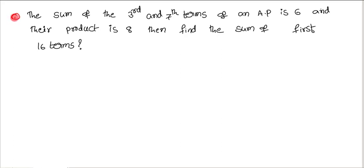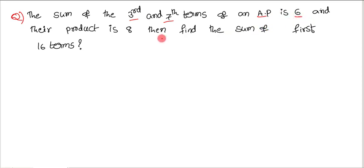Welcome to JSMS Academy. Now we are going to discuss a problem which is based on arithmetic progressions. The sum of the third and seventh terms of an AP is 6 and their product is 8. Find the sum of the first 16 terms.